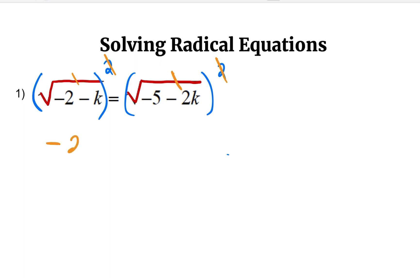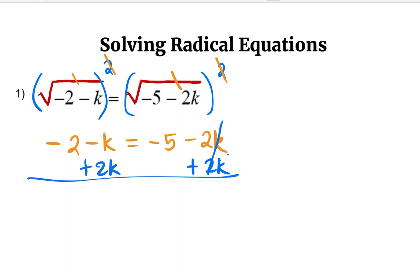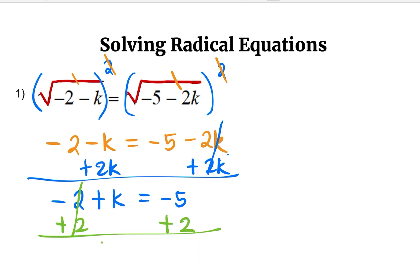So we will have negative 2 minus k equals negative 5 minus 2k. Our goal is to isolate k by itself. I want to place k on the left side of the equation, so I am going to add 2k on both sides. This will leave me with negative 2 plus k equals negative 5. Adding 2 on both sides, that leaves me with k equals negative 3. So the solution for this equation is negative 3.